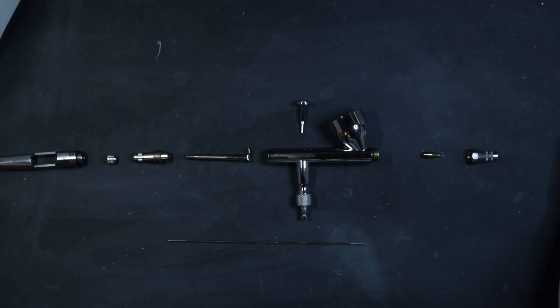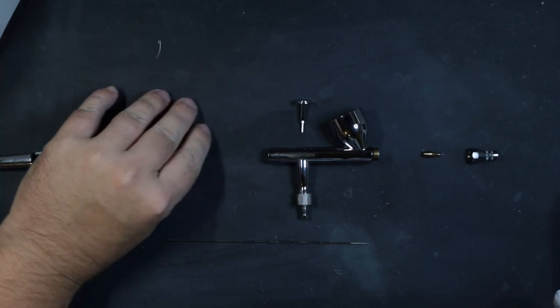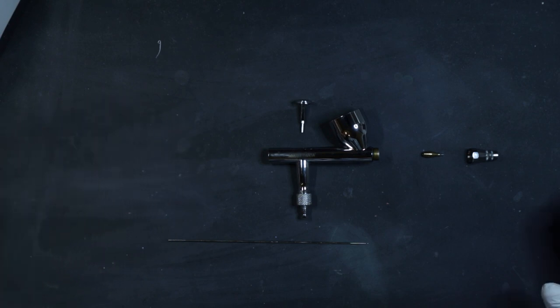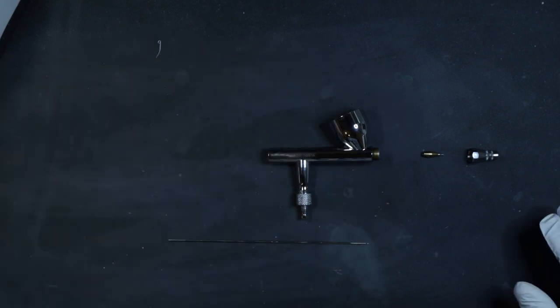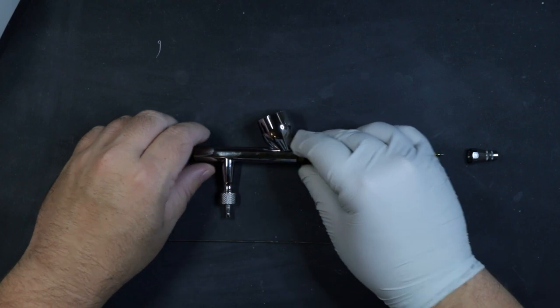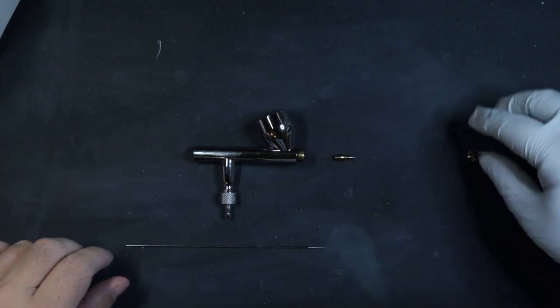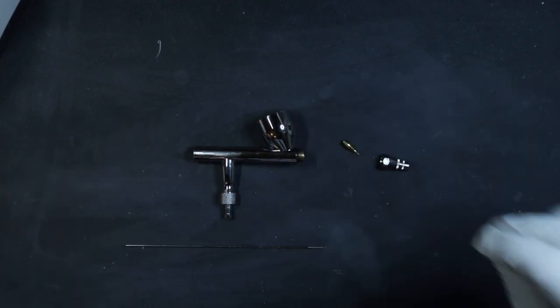So now we have our airbrush completely disassembled. If you get paint on the back parts you can just wipe them up. We're not going to focus on those today, as well as the trigger. What we're really going to focus on is this main body unit here, the needle, the nozzle, and the needle cap.